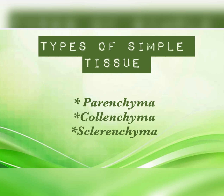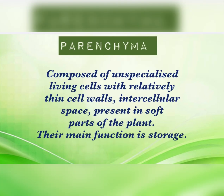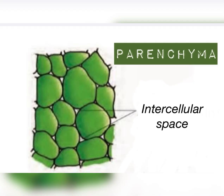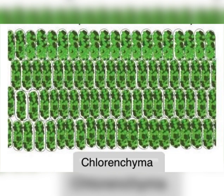Simple tissue is divided into three types: parenchyma, colenchyma, and sclerenchyma. Parenchyma is composed of living cells whose cell wall is very thin. They have intercellular spaces, are present in soft regions of the plant, and the main function is storage. In the diagram, the cells are of variable size with intercellular spaces.